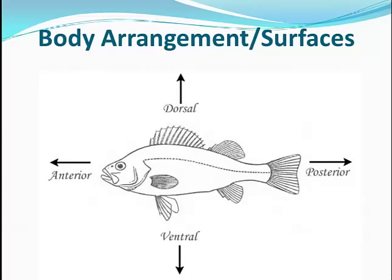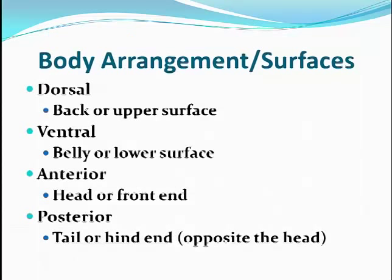Let's talk about body arrangement and the surfaces of the body. The dorsal side is your back or upper surface — think of a dorsal fin on a whale, shark, or dolphin, which sits on top. The ventral side is your belly or lower surface. For front and back: the anterior end is the head or front end — 'ante' generally means before. The posterior end is the tail or hind end — 'post' means after. So dorsal is back, ventral is belly, anterior is front, and posterior is the tail end opposite the head.